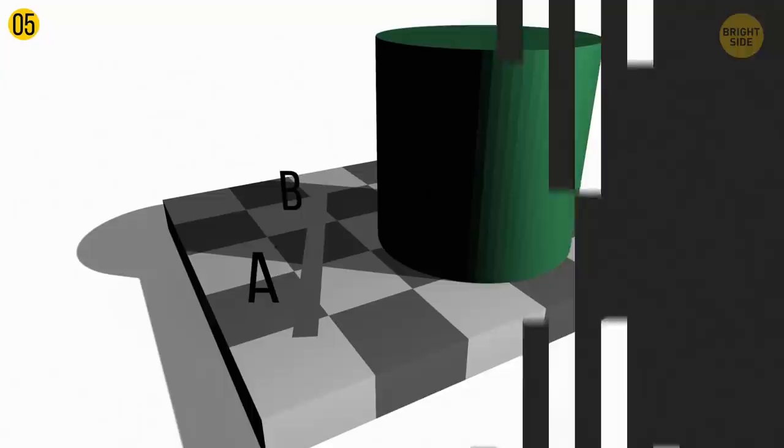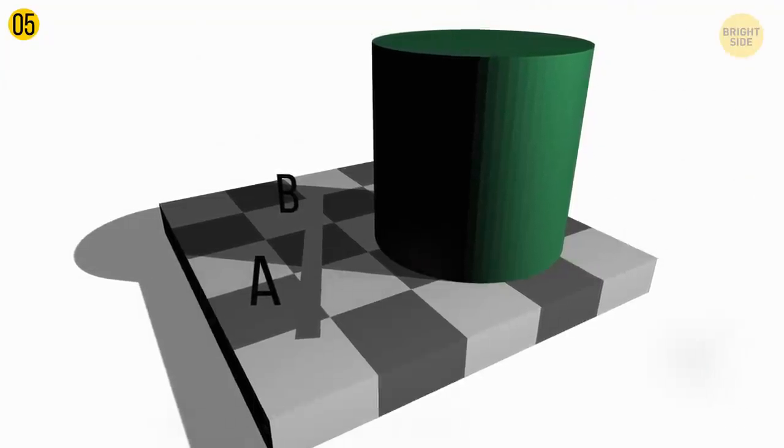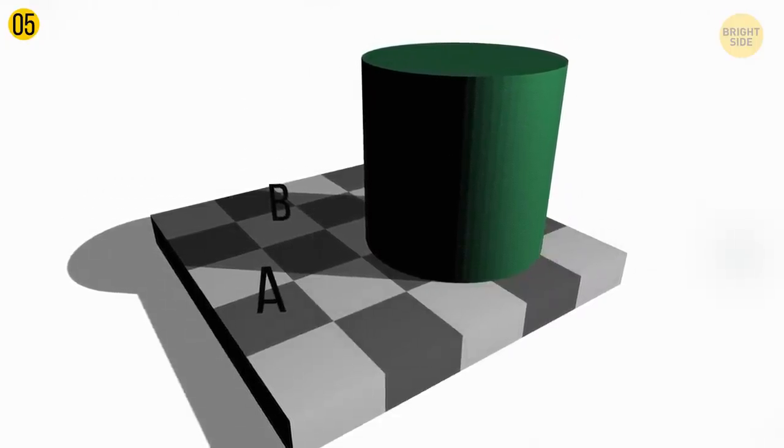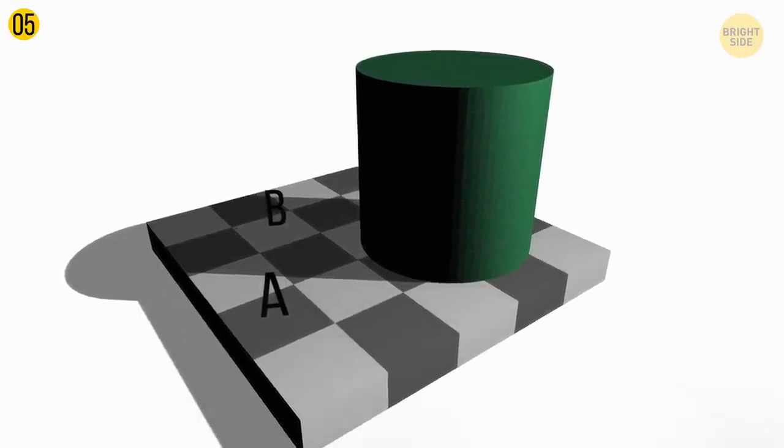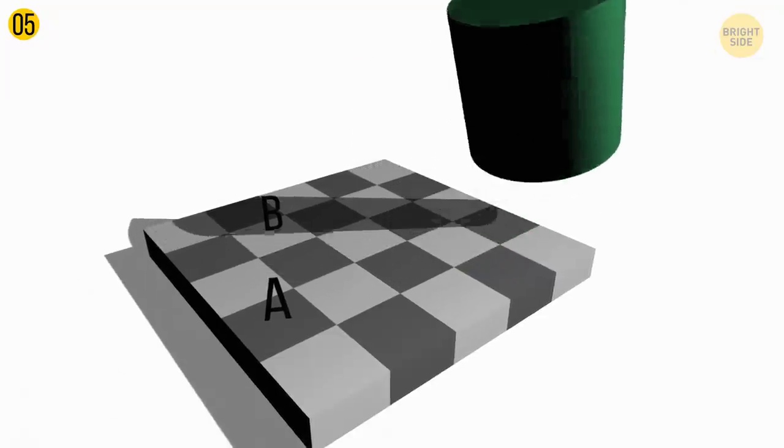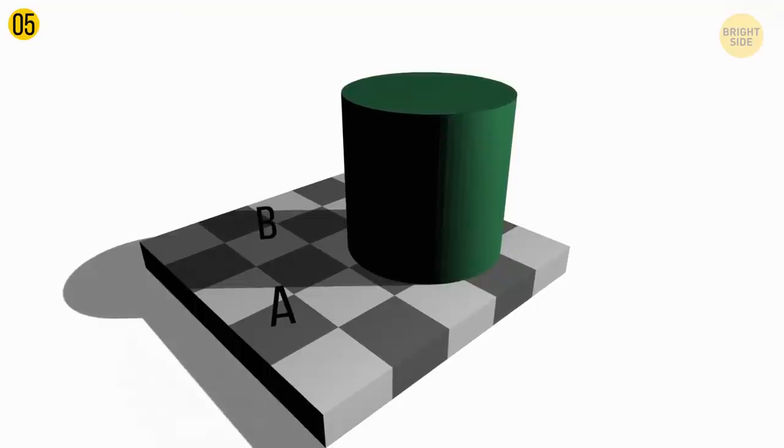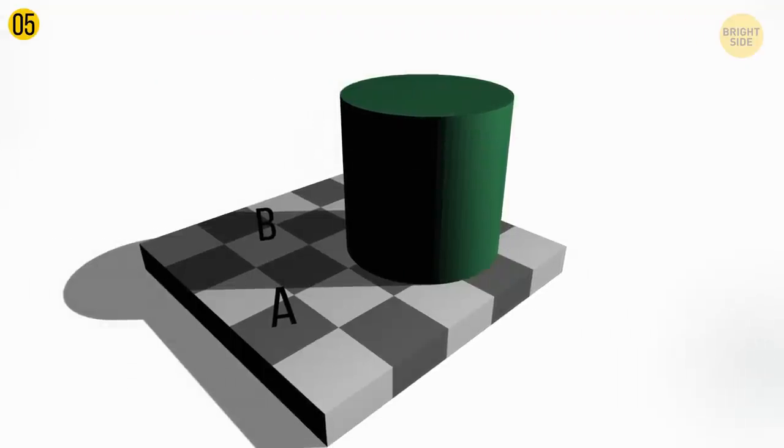This illusion is a perfect example of how your brain uses its previous experience to interpret everything it sees. In the picture, some light is falling onto the surface. And there's also a cylinder that casts a shadow over the dark and light tiles. This fools your mind into believing that tile B is the lightest.